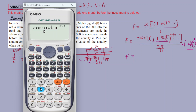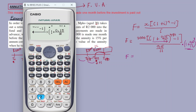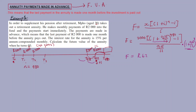So the future value equals 2000 times [(1 + 0.15/12)^480 - 1] divided by (0.15/12), all multiplied by (1 + 0.15/12)^1. The answer is approximately R62 million — specifically R62,807,510.92. This is a very good retirement fund.